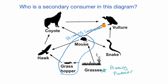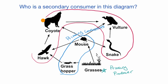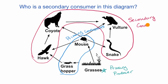The folks who then eat the primary consumers — so this would be the hawk, the coyote, the vulture, and the snake — these would all be secondary consumers.